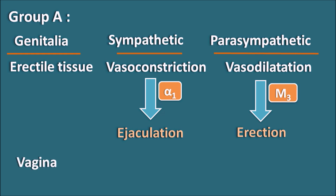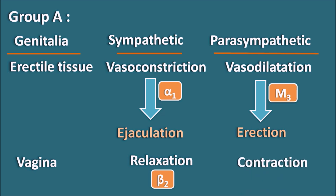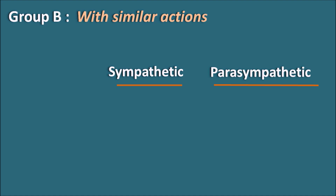At the vagina, the sympathetic system produces relaxation through beta 2 receptors, whereas the parasympathetic system produces contraction mediated through M3 receptors. Here again we can observe that M3 receptors produce contraction of many smooth muscles except the vascular smooth muscle, where they produce vasodilation.